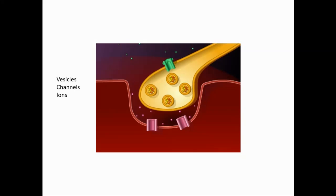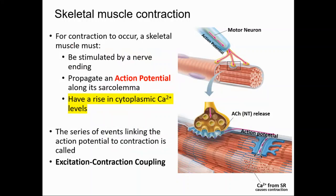There are three important things at this neuromuscular junction. One is the vesicles that contain the neurotransmitter. Another is the channels — these are channels specifically located on the sarcolemma. The third important character here is the ions. These are three components you have to keep in mind in the neuromuscular junction. Now let's go back to our synapse and synaptic terminal — the knob — and see what happens.